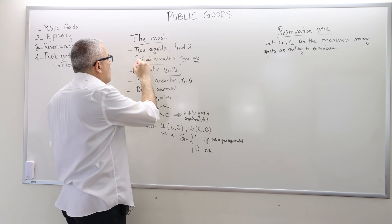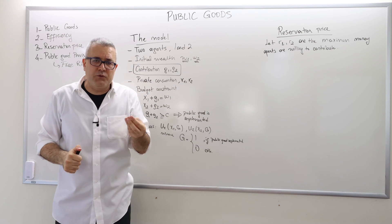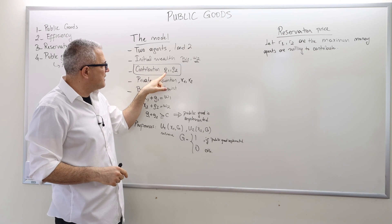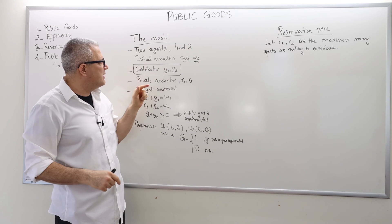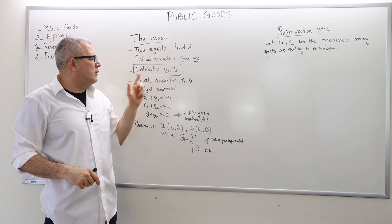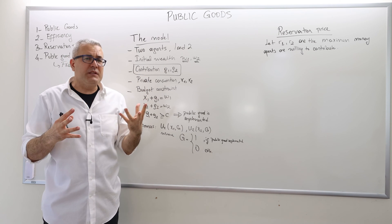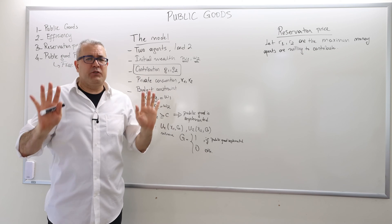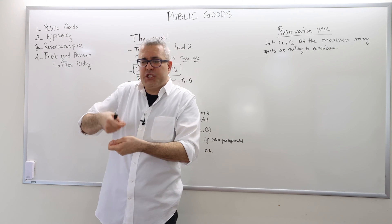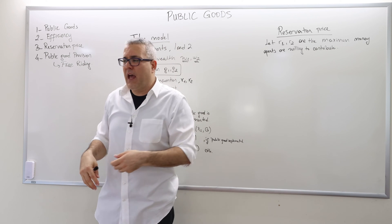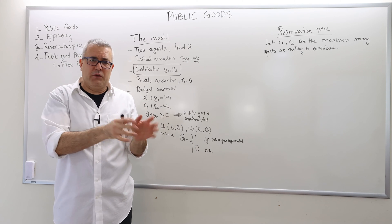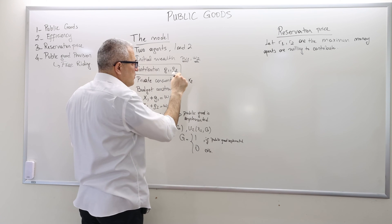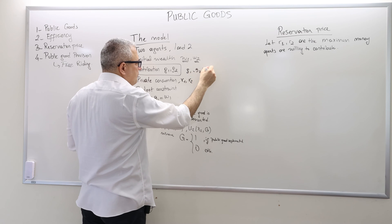We're going to call it contribution. Agent one decides to contribute G1 dollars for the public good and agent two contributes G2 dollars for the public good. Let's suppose these are given to us. G1 and G2 are also dollar amounts and they are positive. W1 and W2 are also positive.